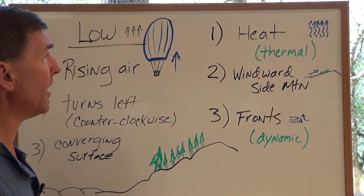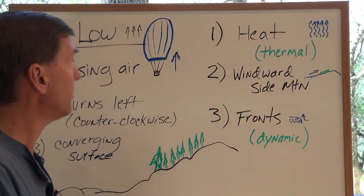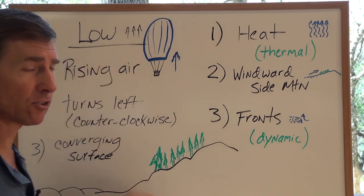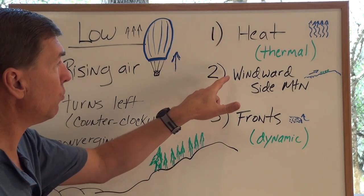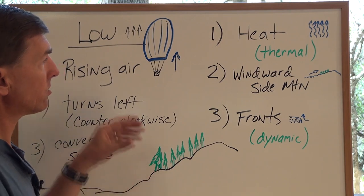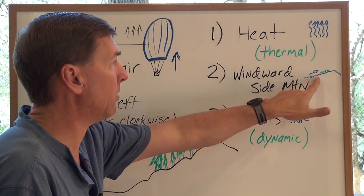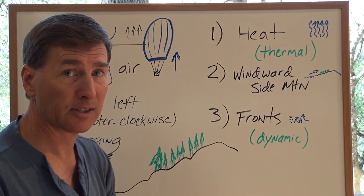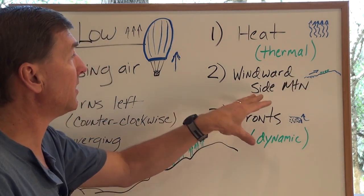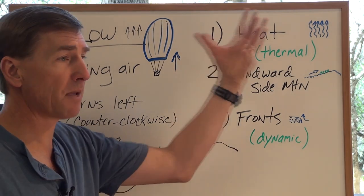The second way that air can be forced up to create a low pressure is, let's say, on the windward side of a mountain. So as a storm is coming through, it is forced up the mountain. And we call that orographic lifting.